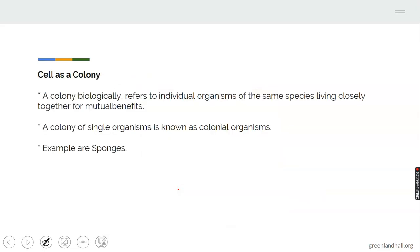Cell as a colony. There are some cells that are colonial in nature. Individual organisms of the same species that live closely together for mutual benefit. A colony of single cell organism is known as colonial organism. For example, we have the sponges.